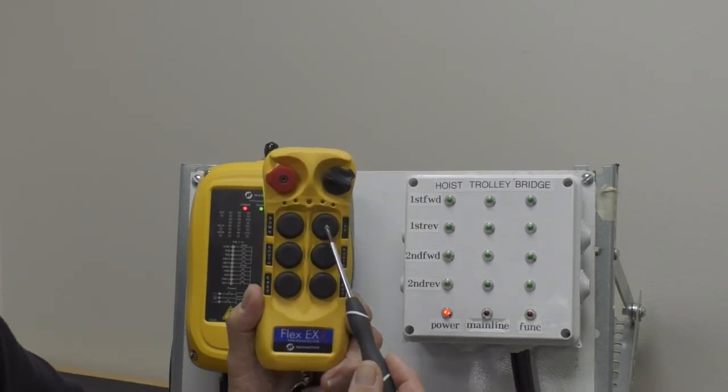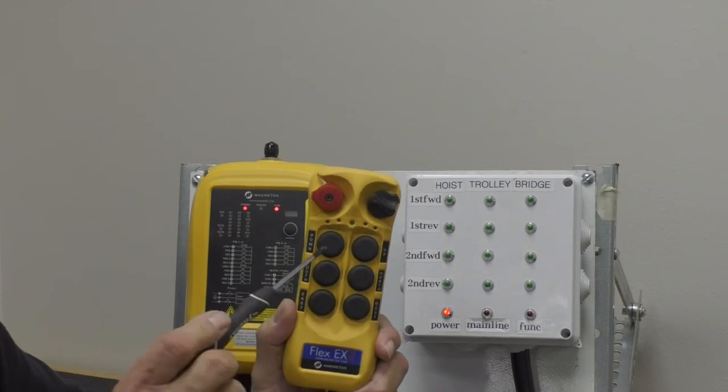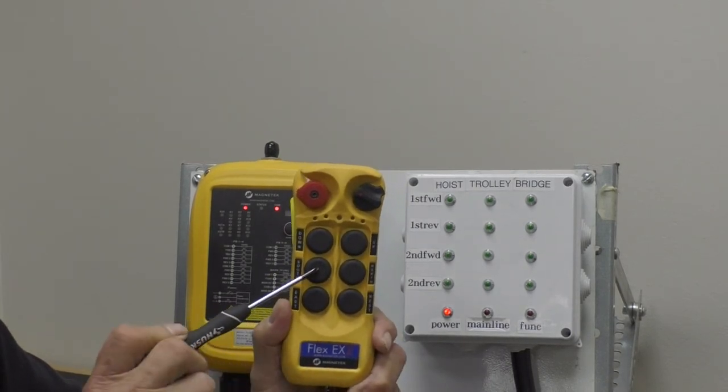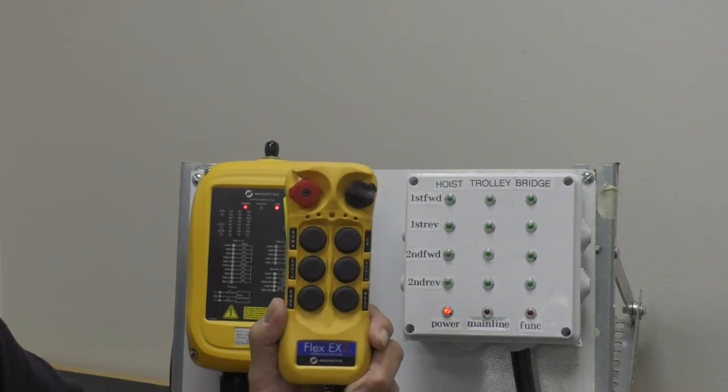Therefore this would be button number one, button number two, button number three, number four, button number five, button number six.